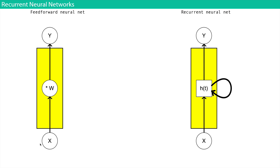You have some input — which can be an image, a set of features, or a feature vector from Wekinator — and it gets multiplied by a bunch of weights, which may be sequentially arranged in layers. You get something on the other side: a label, or maybe a feature vector with higher-level encodings. All of the examples we've looked at so far fit this kind of template.